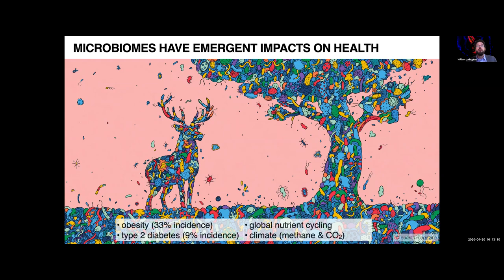The microbiome has really taken biology by storm in the past couple of decades. A lot of what we know comes from advances in deep sequencing and genome sequencing technology. We can take a microbial community sample, extract the DNA — which defines all the genes, all the biochemical functions, the ability to digest sugar, the ability to resist antibiotics — and then we amplify and read it. This process lets us examine the microbial communities of thousands of different environments and hundreds of thousands of different people.